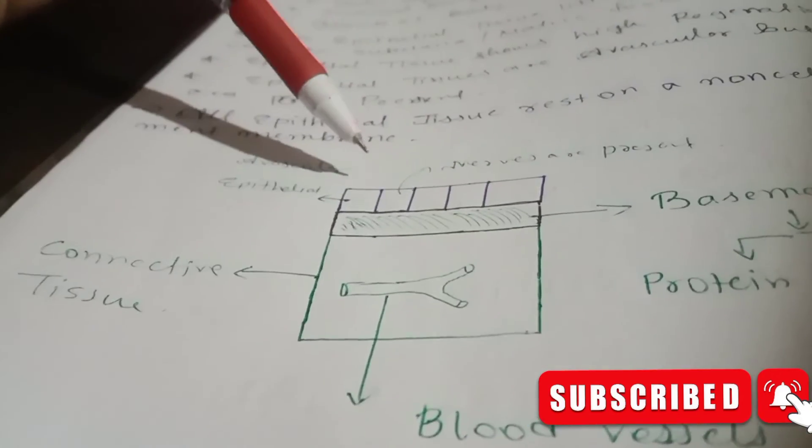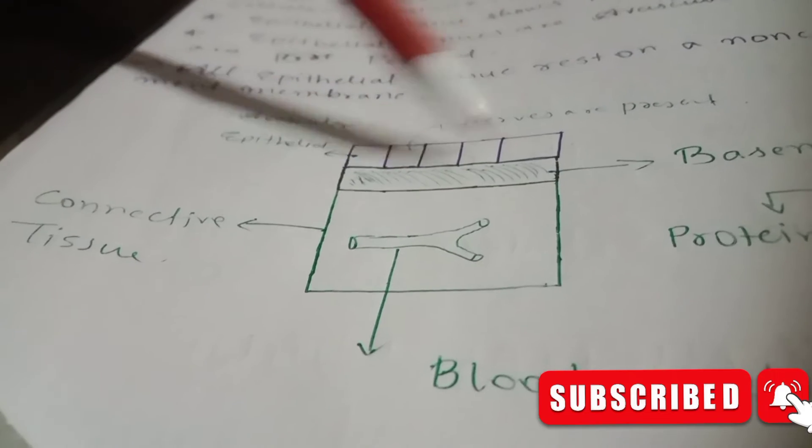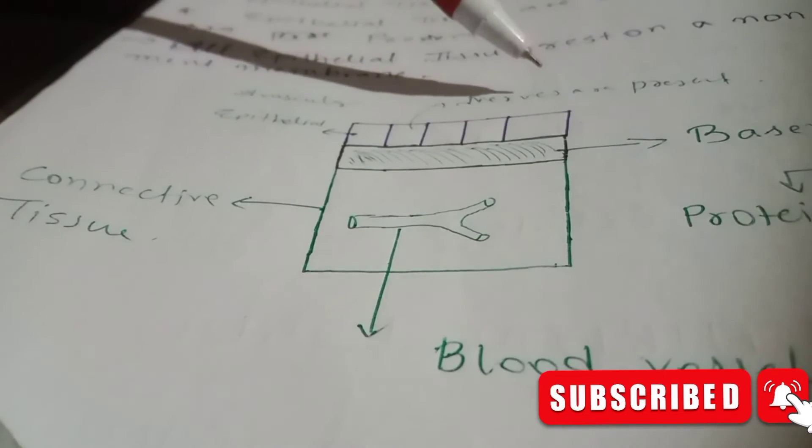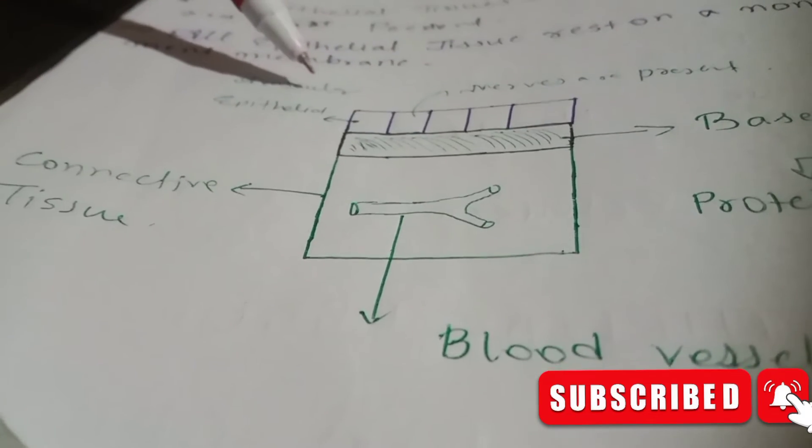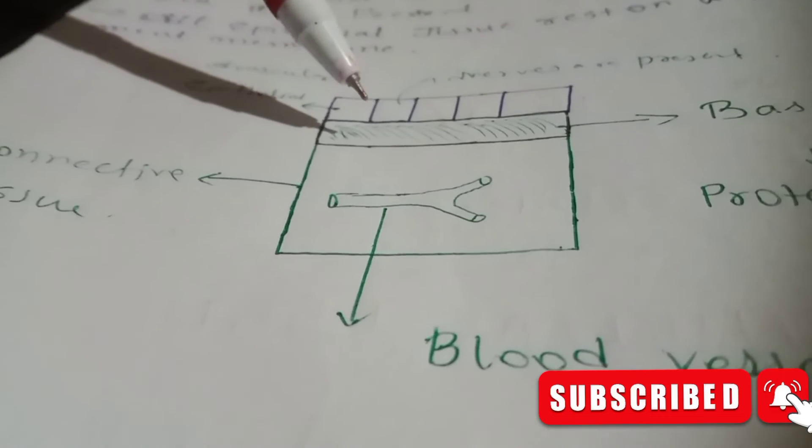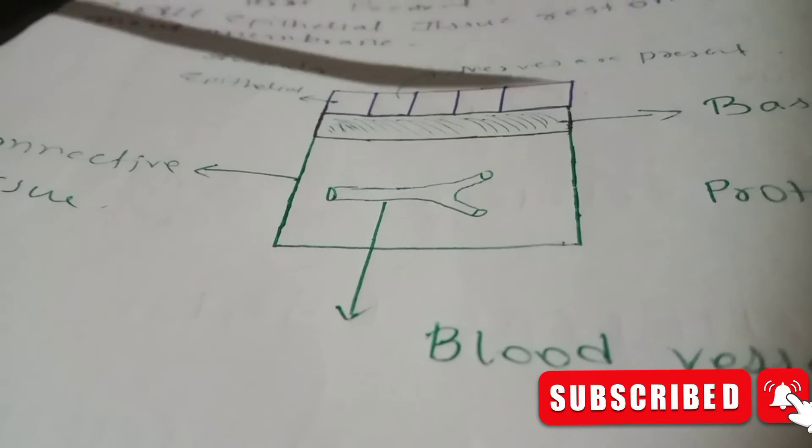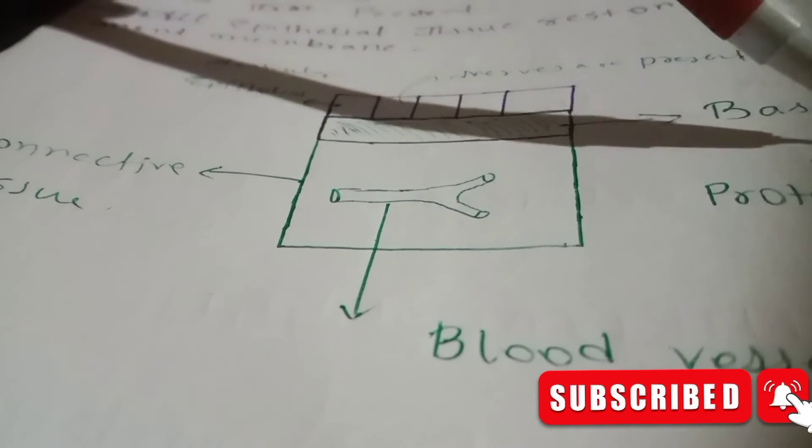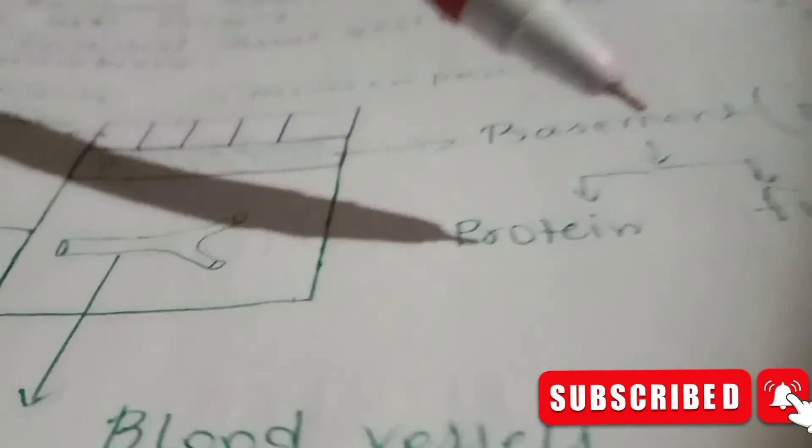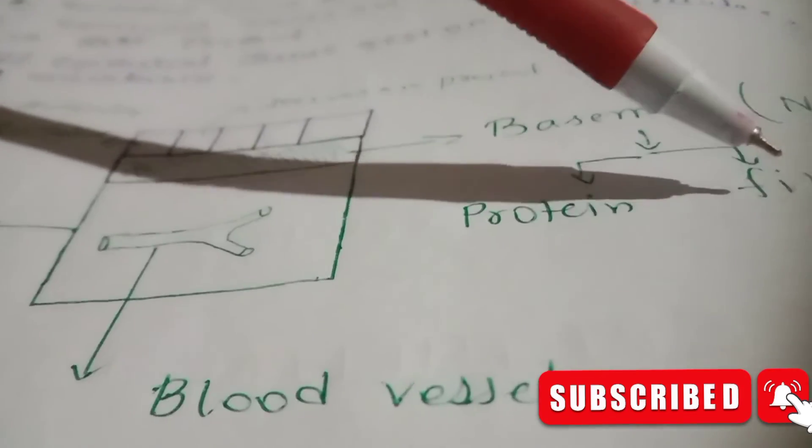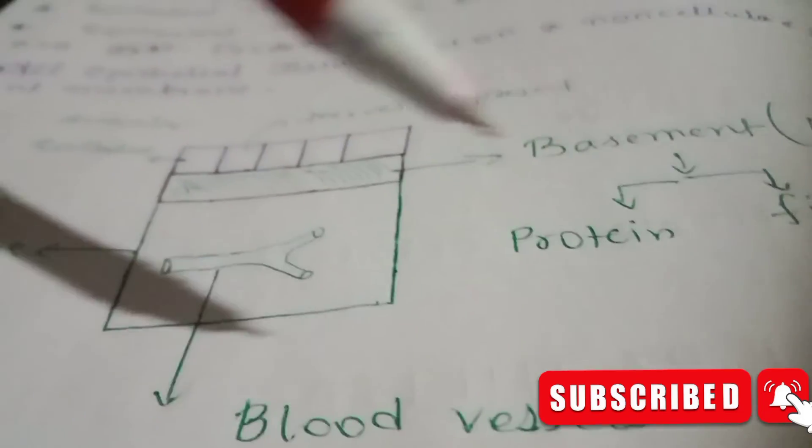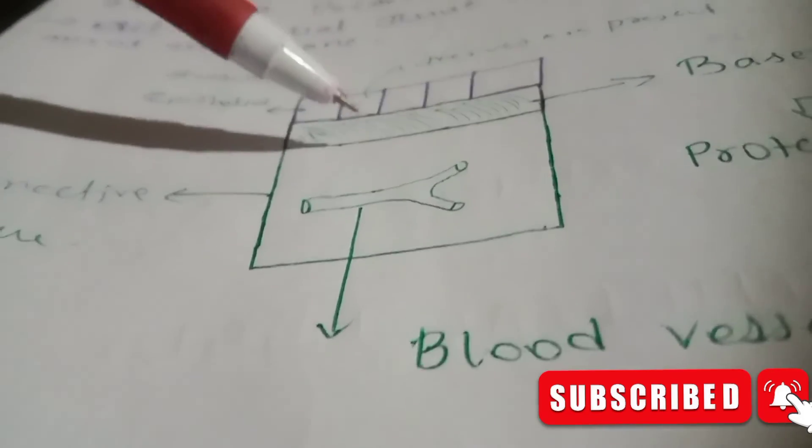This epithelial tissue rests on a non-cellular basement membrane made of proteins or fibers. Below the basement membrane, blood vessels are present in the connective tissue.